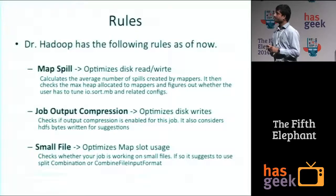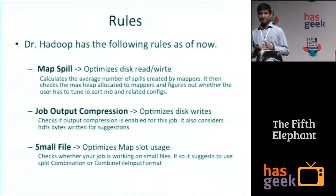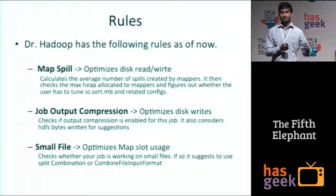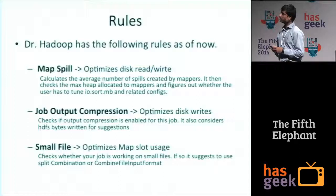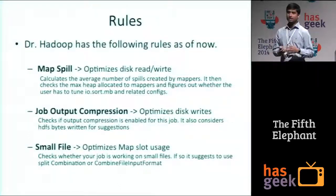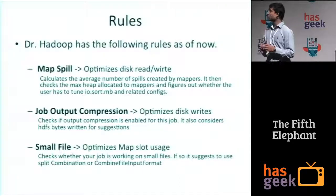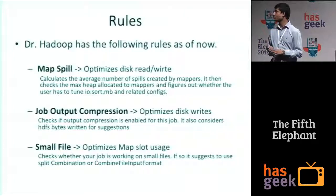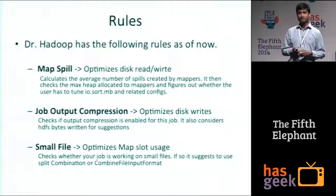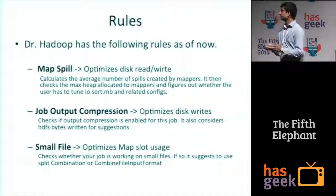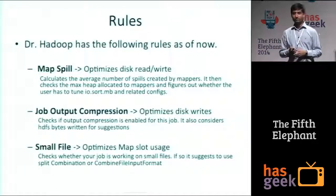To improve spills, the rule calculates the average number of spills and also considers the max heap allocated to every mapper. It uses the counter for how much heap the mapper has actually utilized, and what the difference is that you have not used. It calculates all those things and gives you a recommended value for the sort buffer configuration — IO.sort.mb and other related configurations like record percent — providing the ideal value for your job.